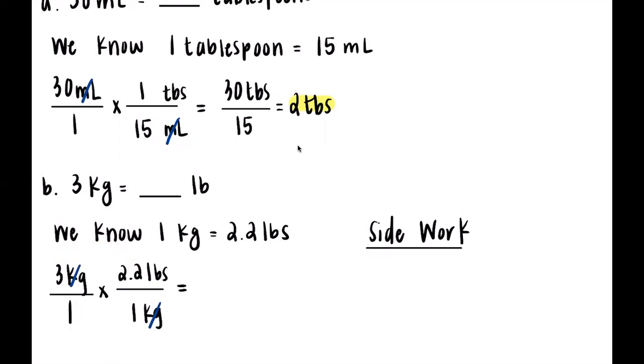We'll do it like this: 2.2 times 3. Well, 2 times 3 is 6, 3 times 2 is also 6. But notice we have one number after the decimal here, zero here, so that implies one number after the decimal in our final answer. So that implies that 3 kilograms is equal to 6.6 pounds.